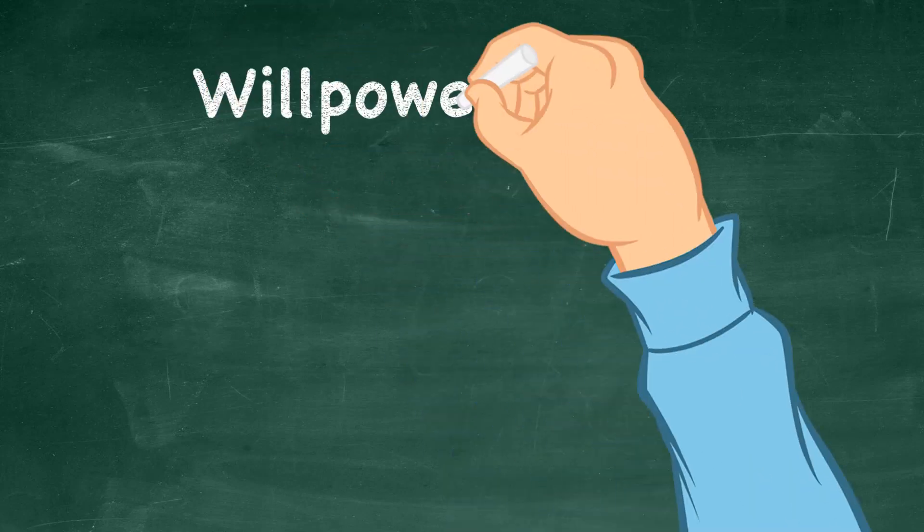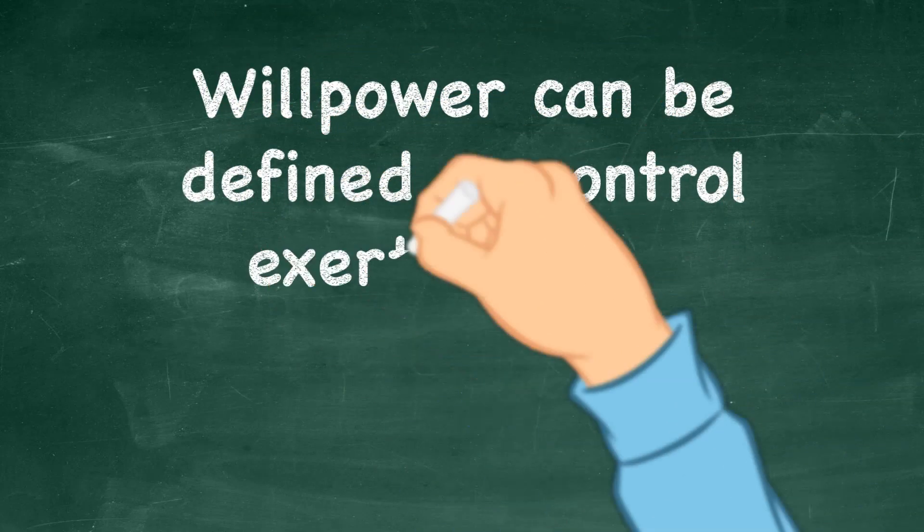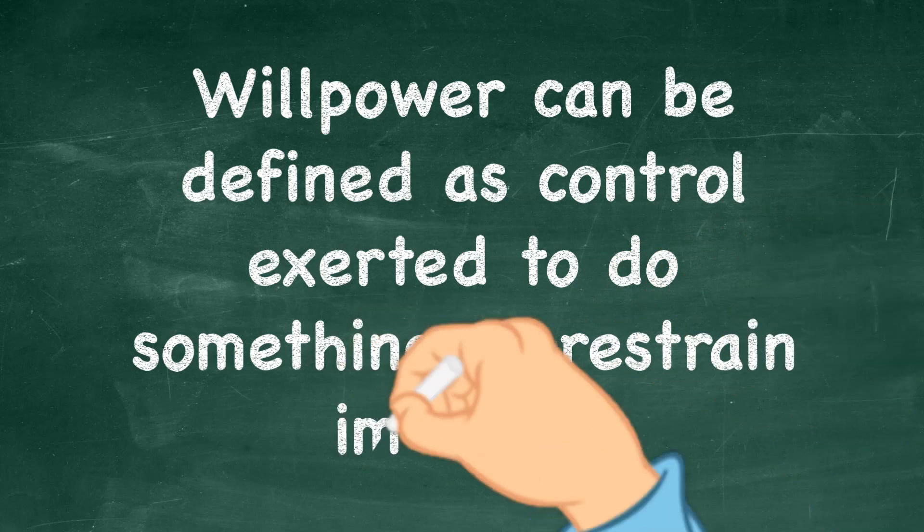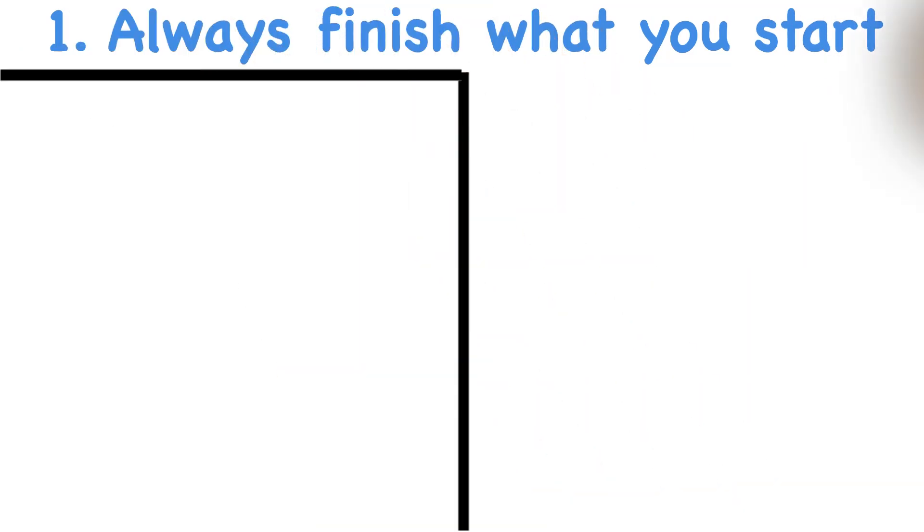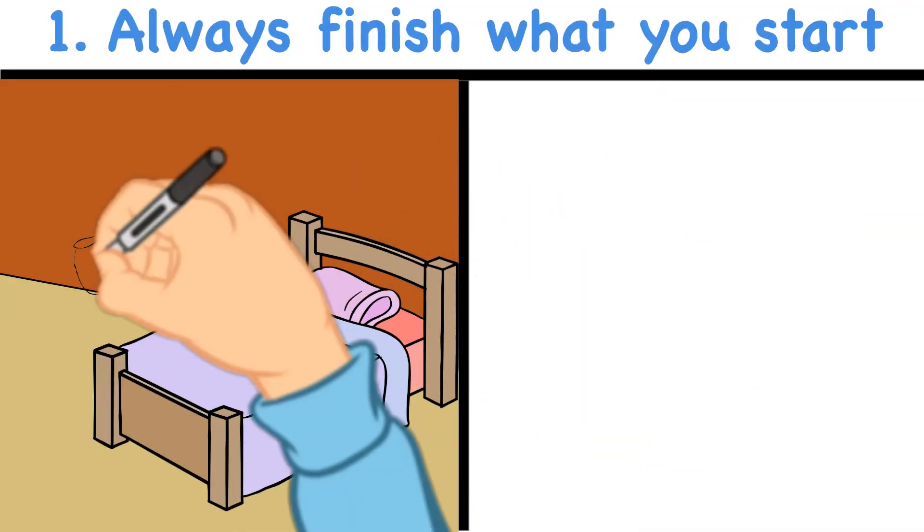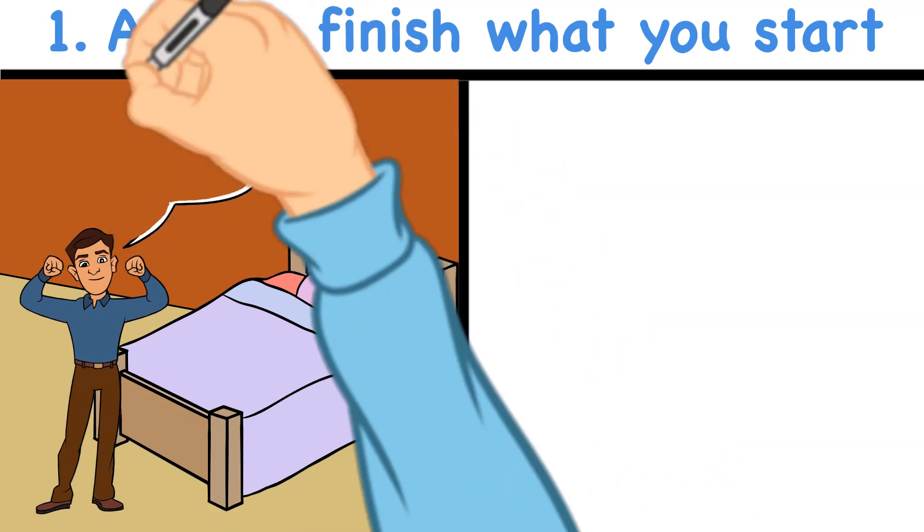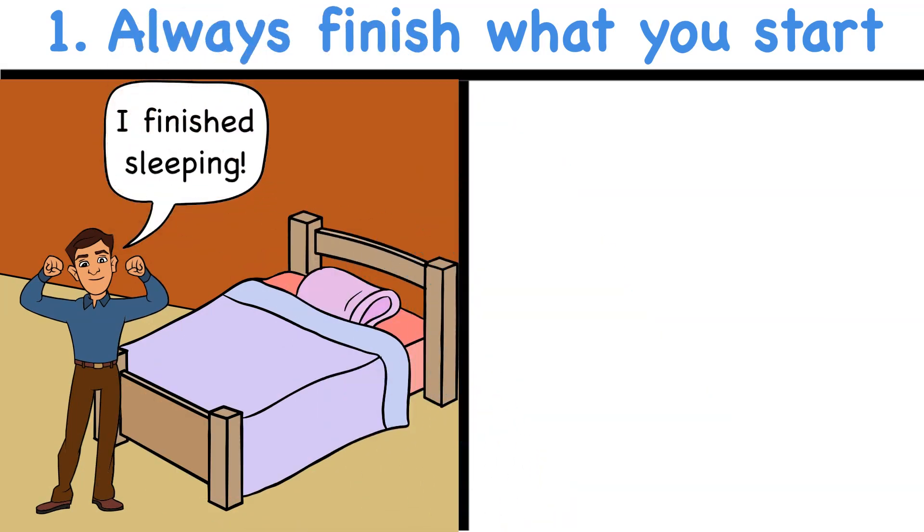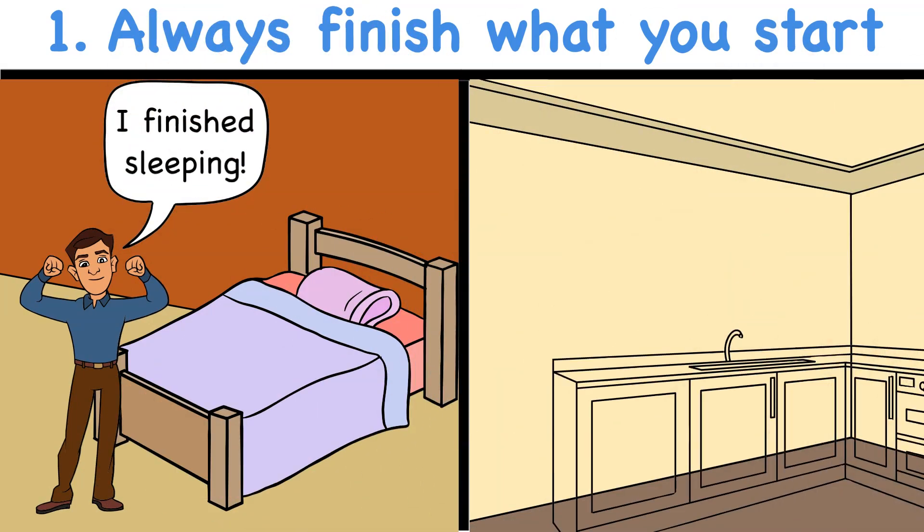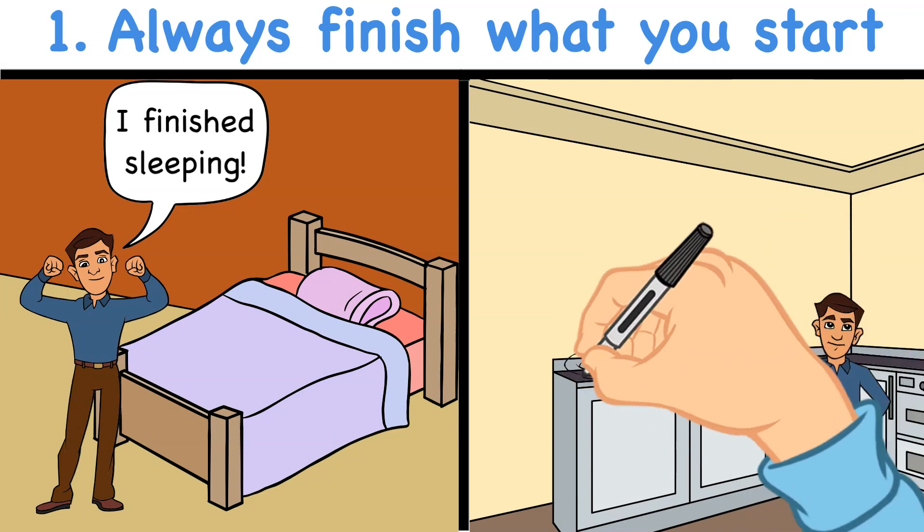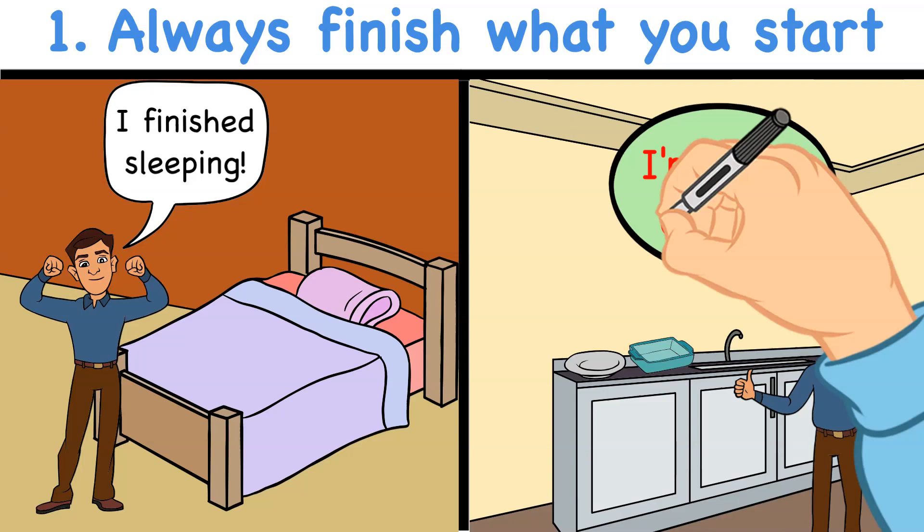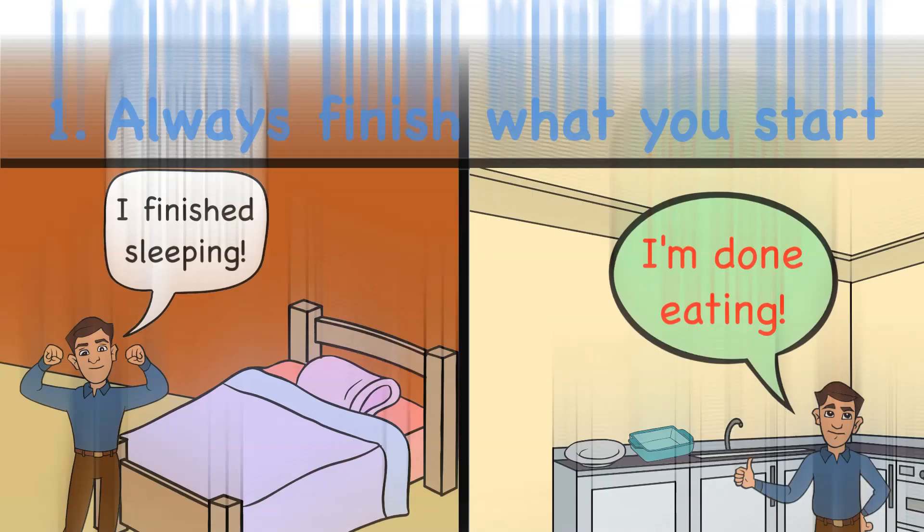Let's start by remembering that willpower can be defined as control exerted to do something or restrain impulses. The first thing you can do to increase your willpower is to always finish what you start. The most common example of this method is making your bed in the morning. Doing this will represent the ending of your sleep. Another way of finishing what you start is to always wash your dishes after you finish eating.